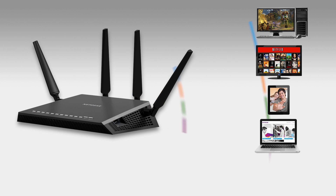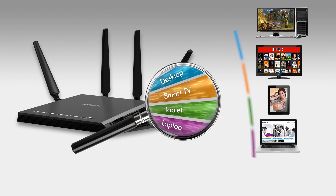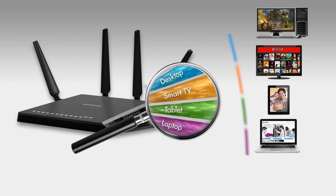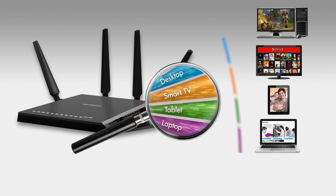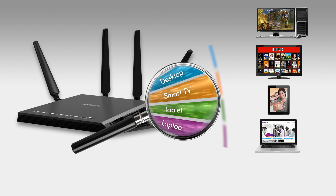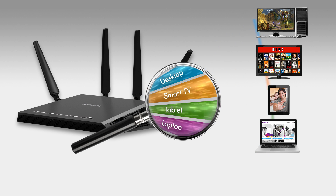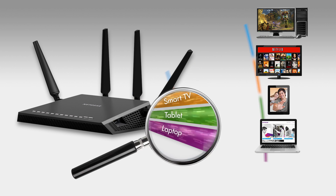Third, the X4 is device aware. It recognizes different devices and allocates the optimal bandwidth for each. If the same Netflix app is streaming to a TV and a laptop, the X4 gives the optimal bandwidth to the TV.